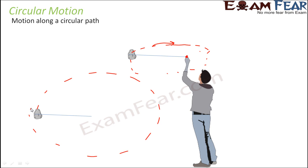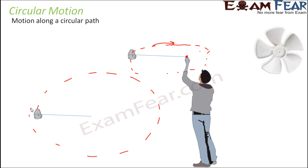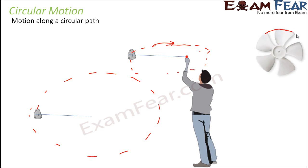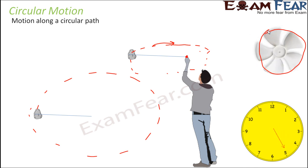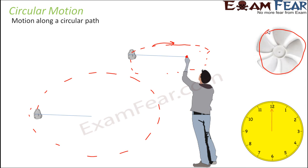Can you think of some examples where objects move in a circular path from your day-to-day life? The movement of the blades of your fan is in a circular path — that is an example of circular motion. Think of the hands of a clock — that also moves in a circular path. So there are many objects around us where we see different types of motion.